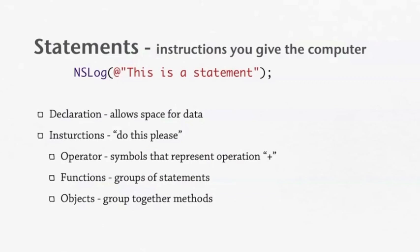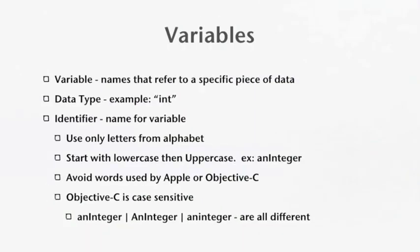Variables are just names that refer to a specific piece of data in memory. There are different types of variables, and these are called data types. For example, 'int' stands for integer. I'll be going over a whole list of different data types in the next slide. There's also an identifier, which is the name for the variable.